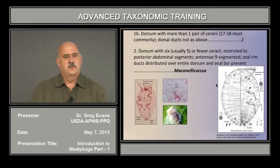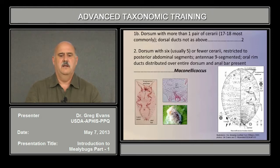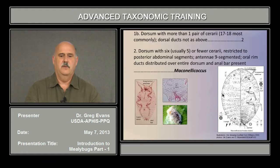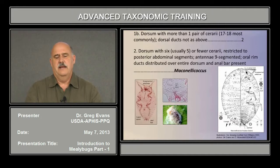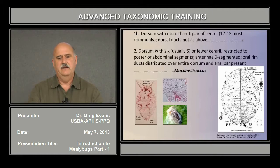If the specimen has cerarii other than just the anal lobe, you move to the next couplet. This one has usually about five cerarii along the abdominal margin. Most common mealybugs have cerarii all the way up the margin to the head — 17 or 18 pairs. These also have nine-segmented antennae and oral rim ducts distributed all over the dorsum. With this combination of characters, that leads you to Maconellicoccus hirsutus, the pink hibiscus mealybug, which also has an anal bar at the bottom.